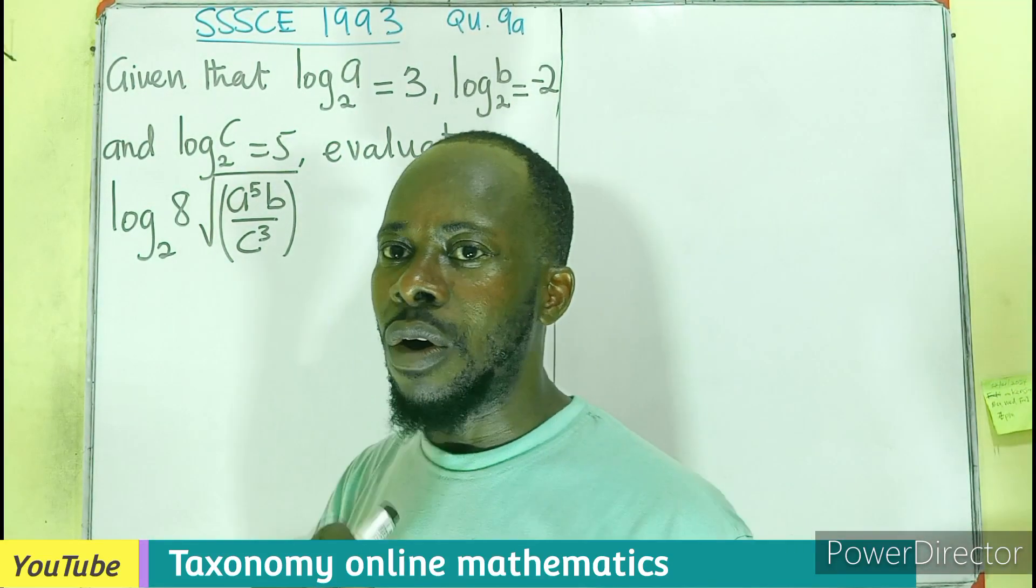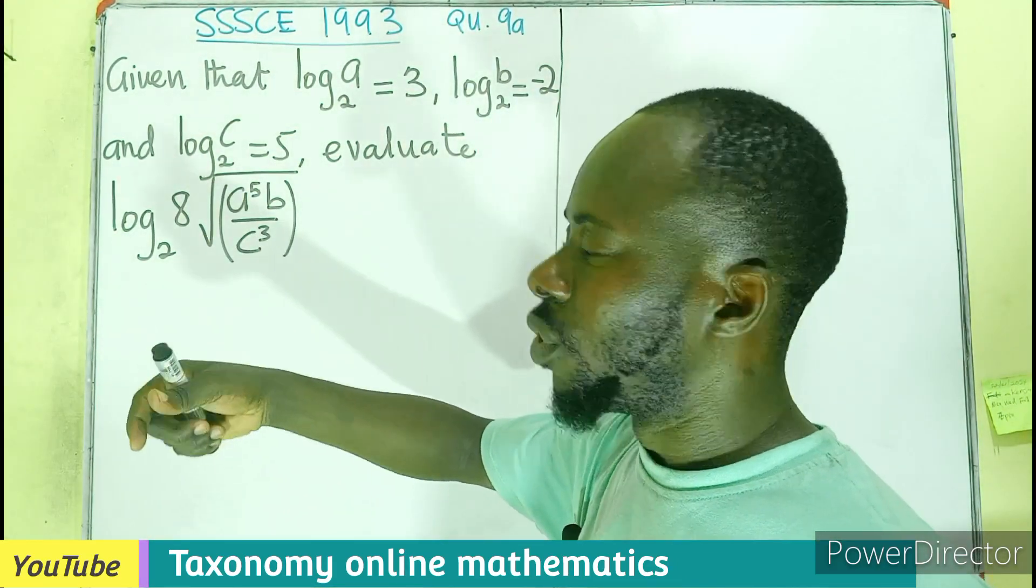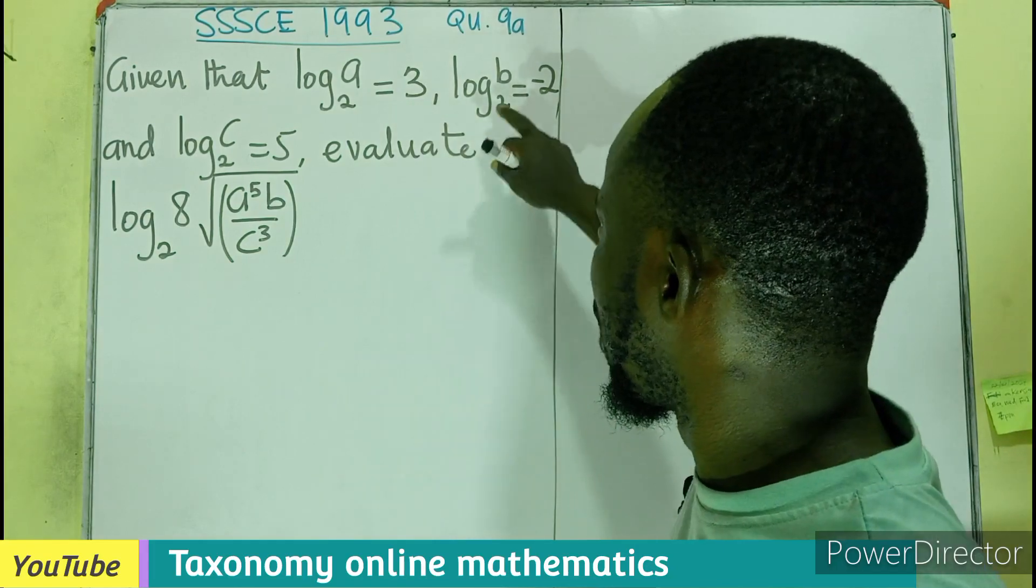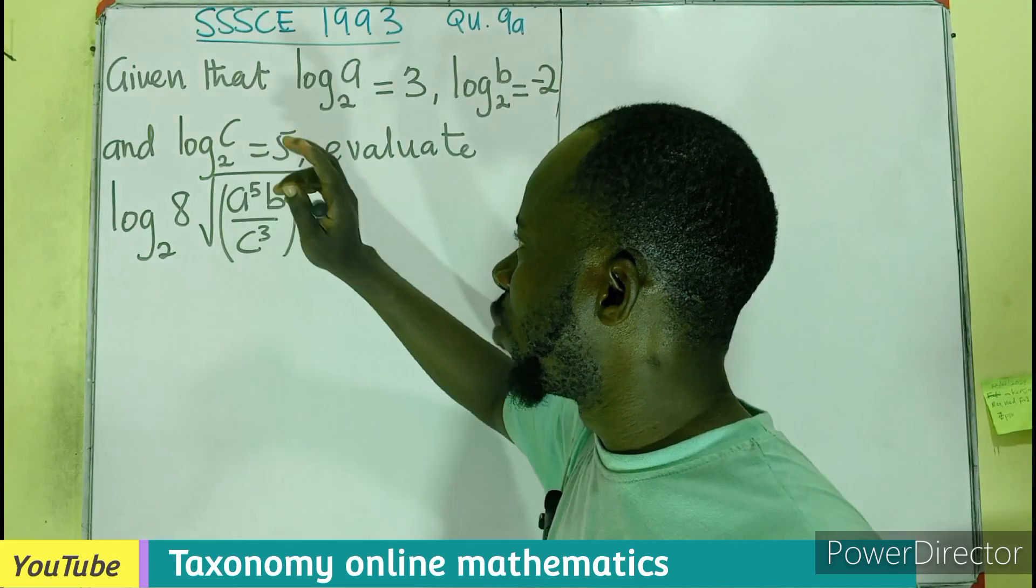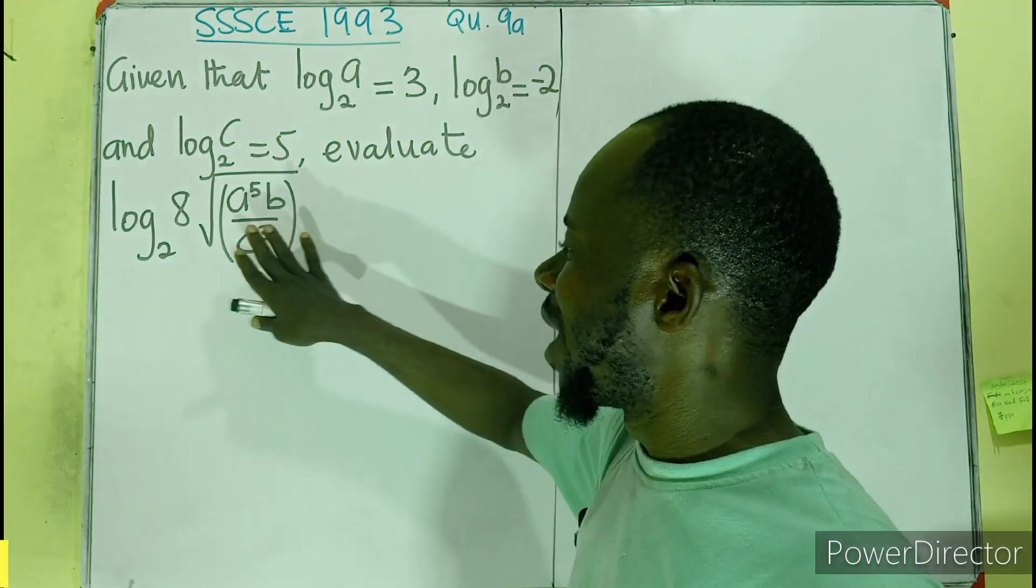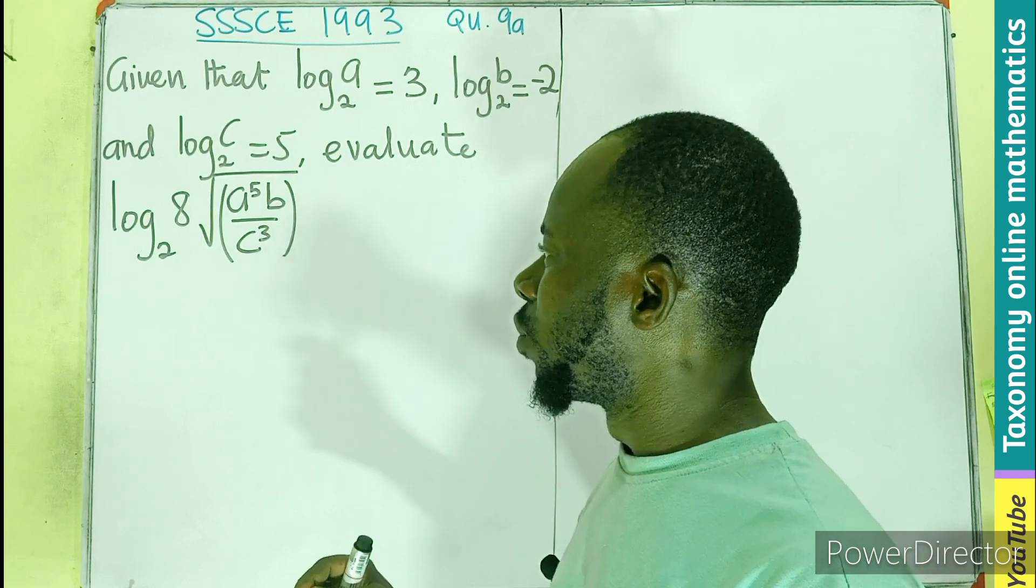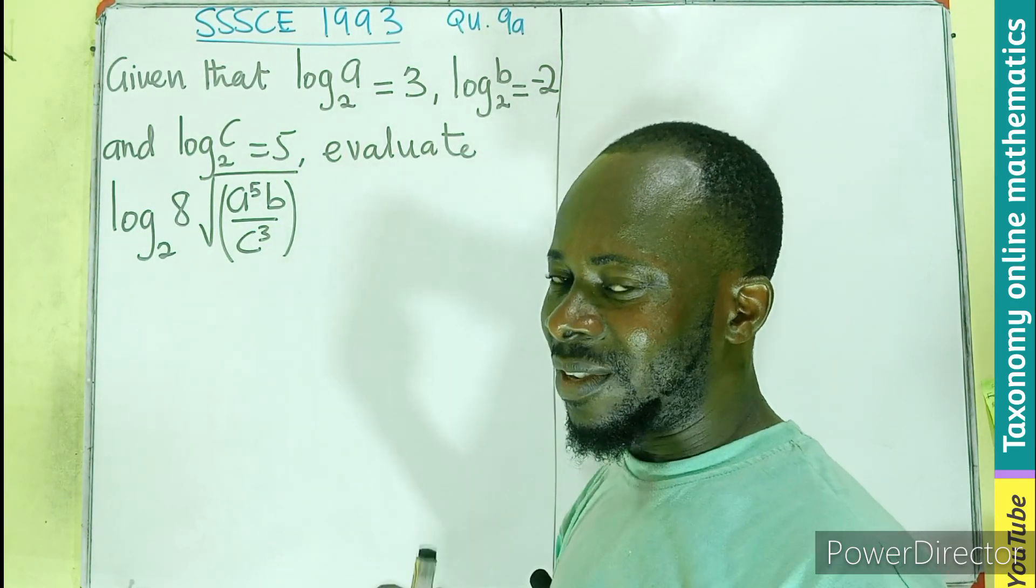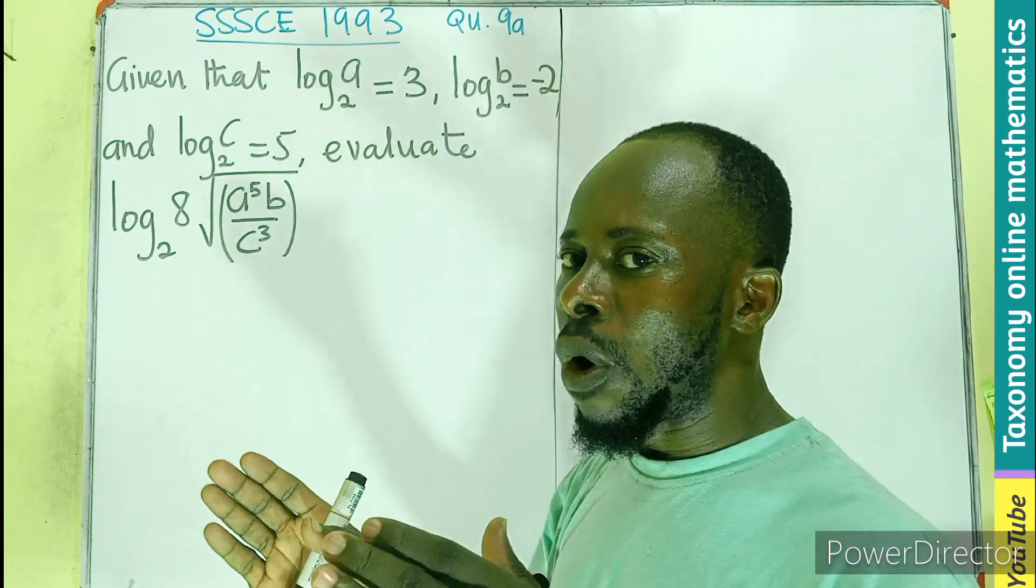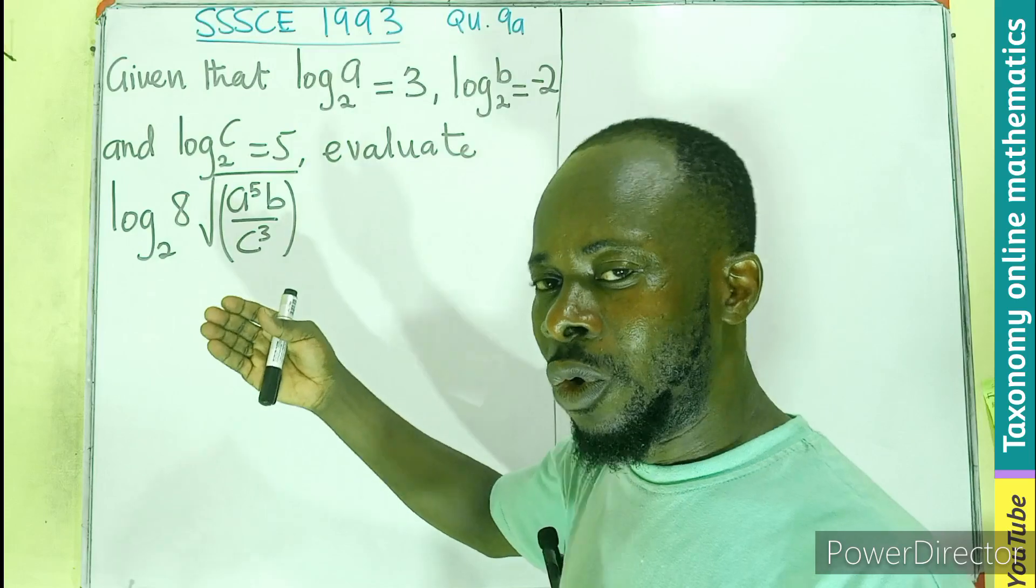Given that the log of A base 2 equals 3, the log of B base 2 equals negative 2, and the log of C base 2 equals 5, we have to evaluate the log of 8 times the square root of A exponent 5 times B divided by C exponent 3 all to the base 2. We have to simplify this or evaluate this, looking for the value.